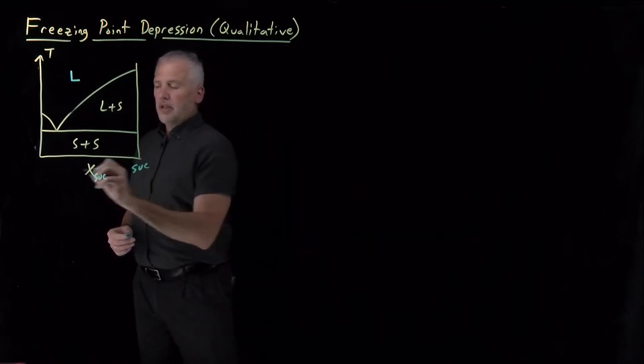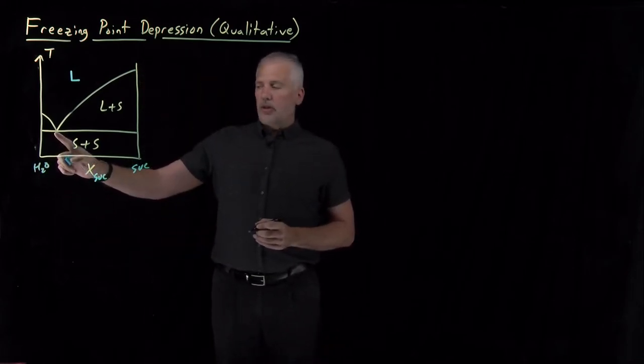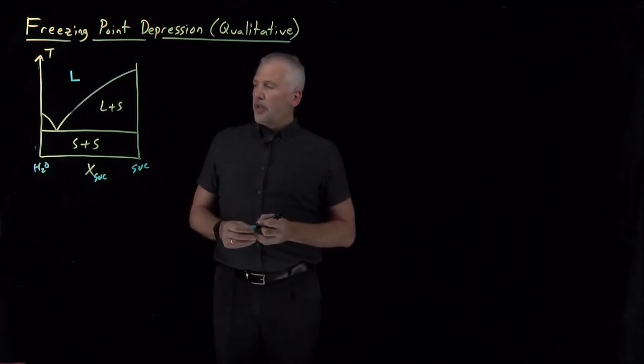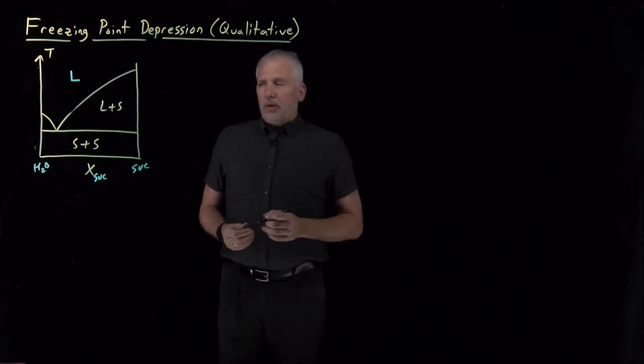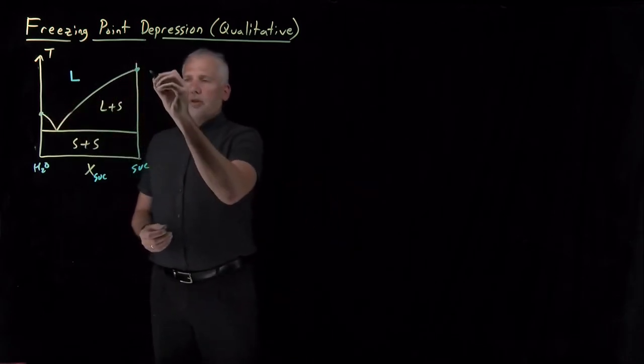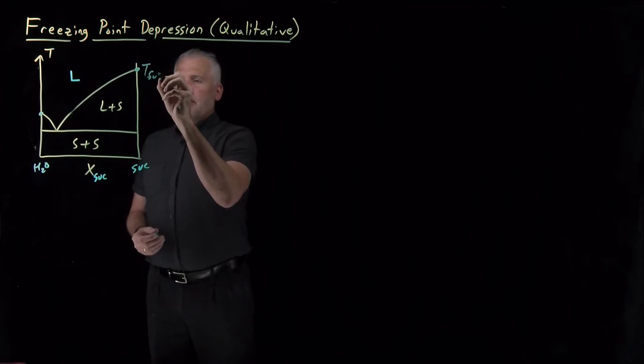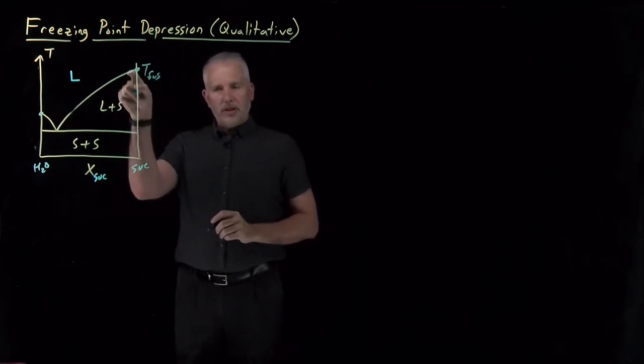So if I have sucrose on this side, water on this side, I form a eutectic at a relatively low concentration of sucrose in water. The important point is to observe that when I add a little bit of water to the melting point of sucrose, the melting point decreases. It becomes lower.